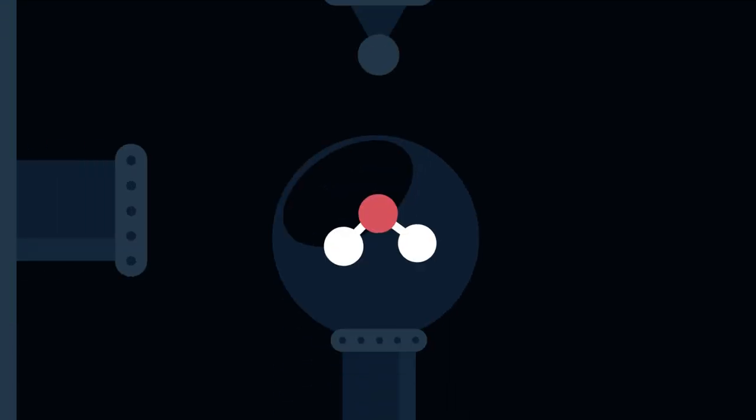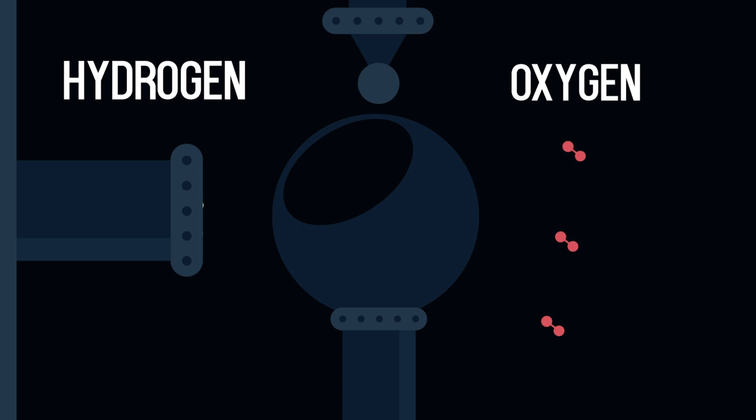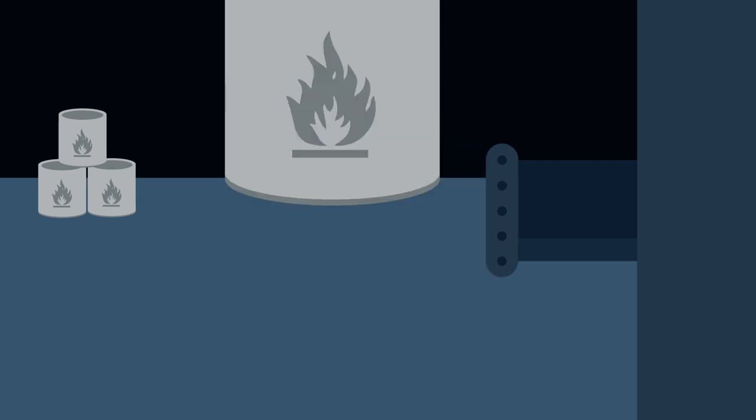We can mimic this by using electricity to split water into hydrogen and oxygen. The oxygen is released into the atmosphere but the hydrogen is stored as a fuel for motor vehicles.